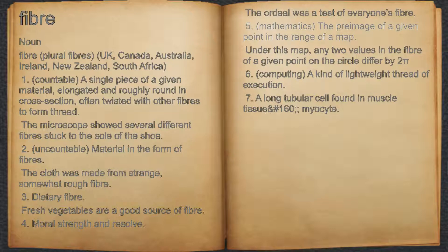5. Mathematics. The preimage of a given point in the range of a map. For example, under this map, any two values in the fiber of a given point on the circle differ by 2.